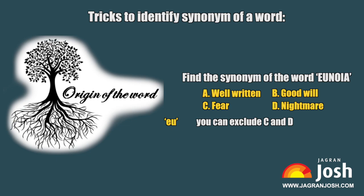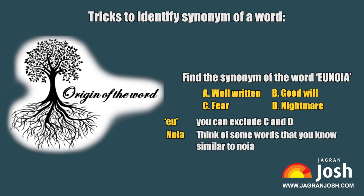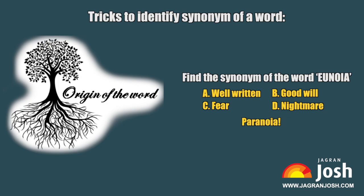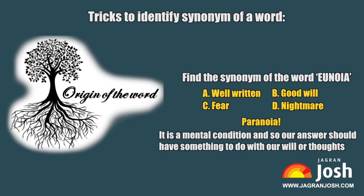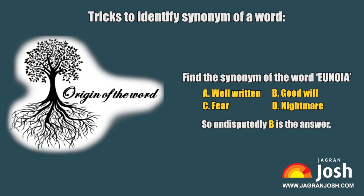Now come to the second part: 'noya'. Think of some words that you know are similar to 'noya'. By this time you must have got it — Paranoia. It is a mental condition, and so our answer should have something to do with our will or thoughts. So undisputedly, B — Good will — is the answer.